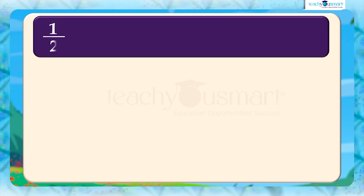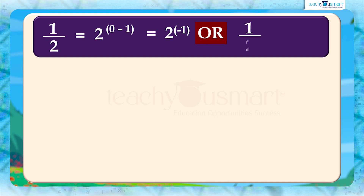Continuing further: 1 by 2 equals 2 raised to 0 minus 1, equals 2 raised to minus 1. Or, 1 by 2 raised to 1 equals 2 raised to minus 1.